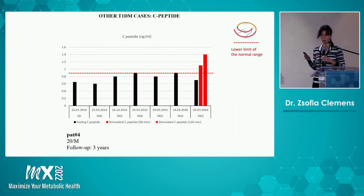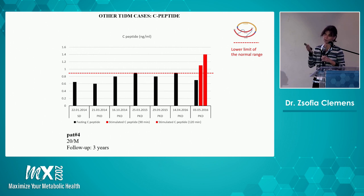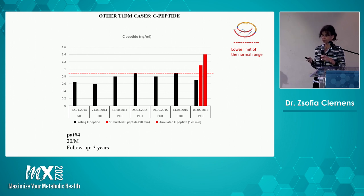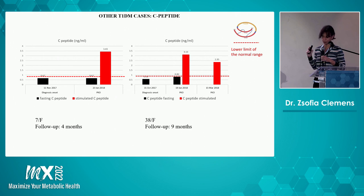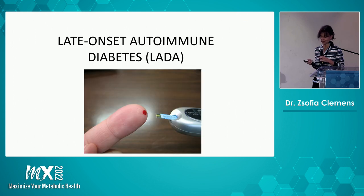Usually we measure the stimulated C-peptide one hour after the PKD breakfast. The interesting finding is that the stimulated C-peptide is always in the normal range — the red dotted line represents the low end of the normal range — which means that if there is a need to produce insulin, these patients are able to produce their own insulin. In a few additional cases, including a child and an adult woman, C-peptide is preserved plus there is an additional increase when measuring stimulated C-peptide. This is basically the case with each and every newly diagnosed type 1 diabetes patient.